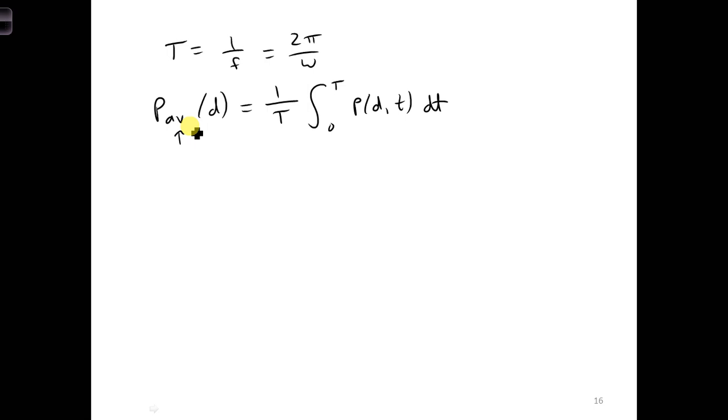So let's first calculate the instantaneous power. Let's first come up with an expression for the instantaneous power on the transmission line, and then we can calculate the time average power and figure out how much power is reflected versus delivered to the antenna.